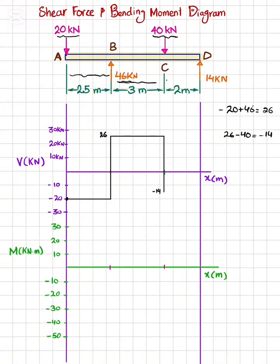From C to D there is no other load so it will remain the same till the end. At the end you can see you have plus 14. So minus 14 plus 14 will equal zero, so shear force will go to 0. This is your shear force diagram.